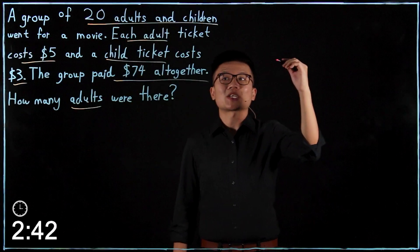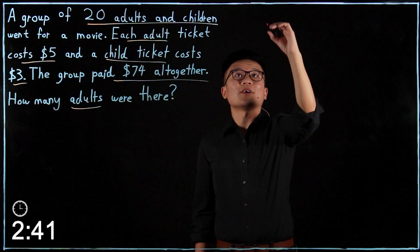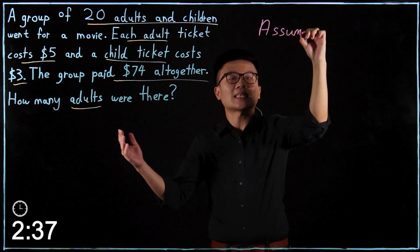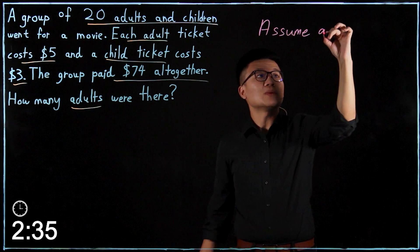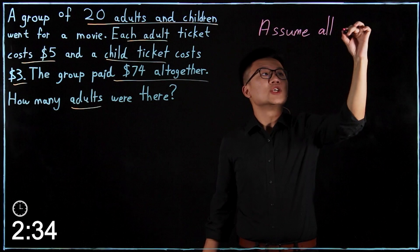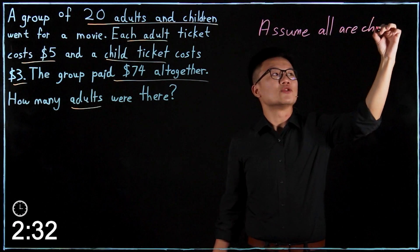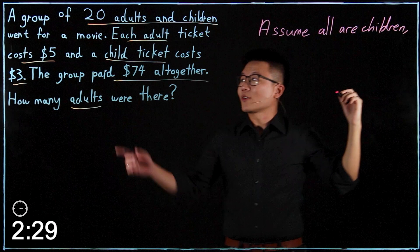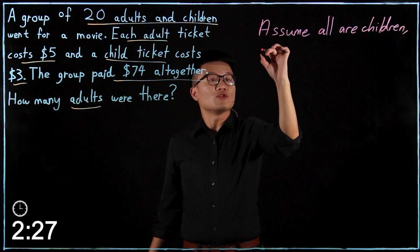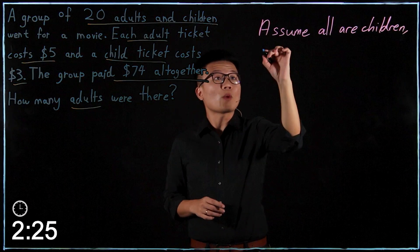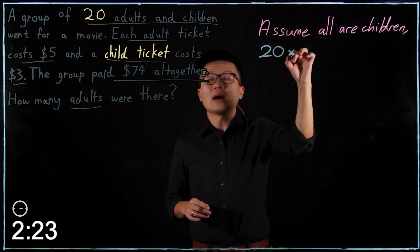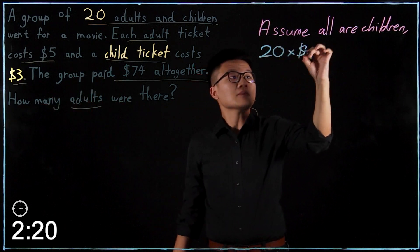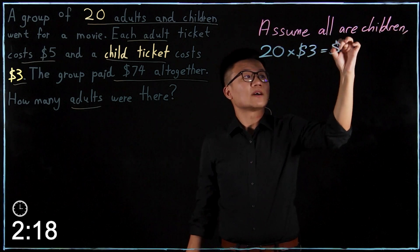So now let's begin doing the question. First of all, we assume the opposite. In this case, when the question is asking for adults, we assume all are children. So that would mean it is 20 children multiplied by $3, which gives us $60.